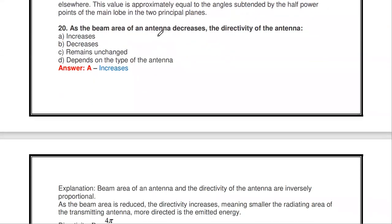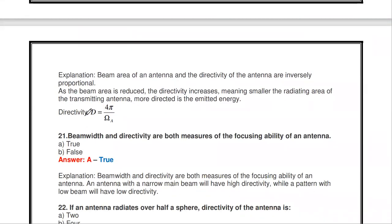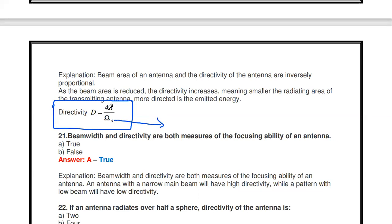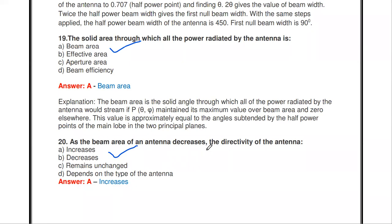As the beam area of an antenna decreases, the directivity of the antenna — increases, decreases, remains unchanged, or depends on antenna type? The answer is increases. The relation is D = 4π / ΩA, where ΩA is the beam area. So directivity and beam area are inversely proportional. Therefore, if beam area decreases, directivity increases.